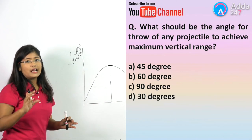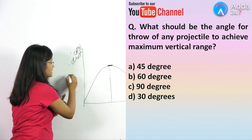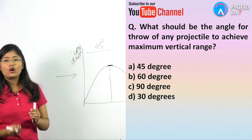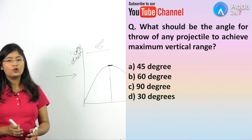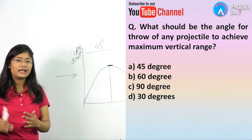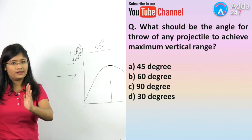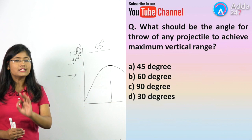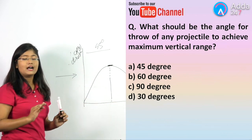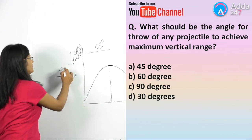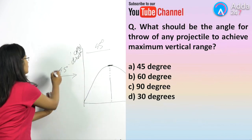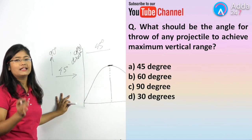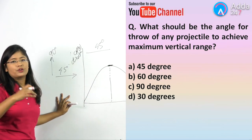If horizontal range were asked, the answer would be 45 degrees. But we know that when launching a rocket or satellite to achieve maximum vertical range or maximum height, we launch it at 90 degrees. So since the question asks about vertical range, the correct answer is option number C — 90 degrees. Remember: horizontal range → 45 degrees; vertical range → 90 degrees.